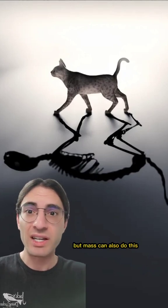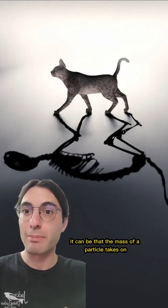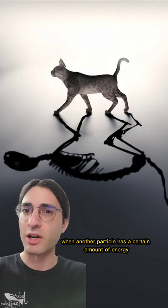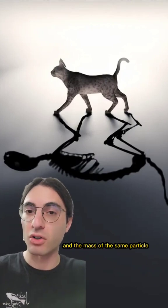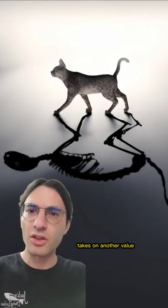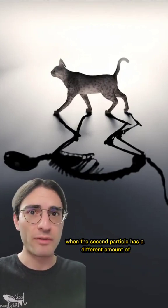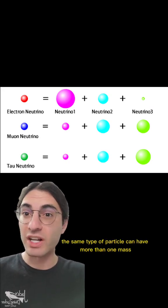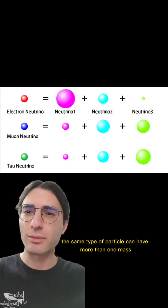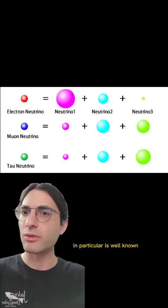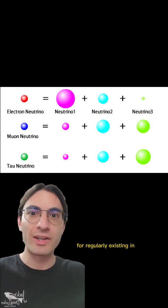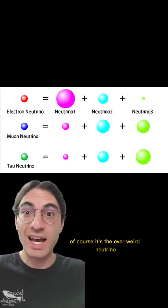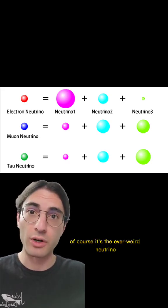But mass can also do this. It can be that the mass of a particle takes on one value when another particle has a certain amount of energy, and the mass of the same particle takes on another value when the second particle has a different amount of energy. You heard me right — the same type of particle can have more than one mass. In fact, one particle in particular is well known for regularly existing in a superposition of different mass states. Of course, it's the ever-weird neutrino.